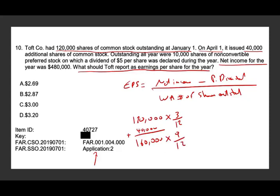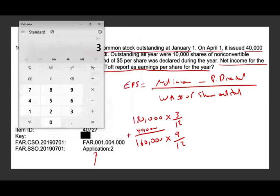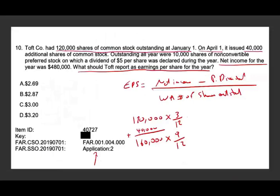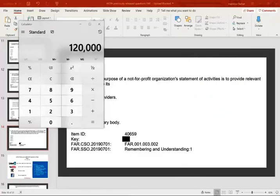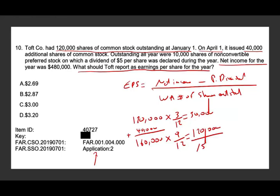We need to find the denominator — the weighted average number of shares outstanding. 3/12 times 120,000 equals 30,000. Then 9/12 times 160,000 equals 120,000. So the denominator — the weighted average number of shares outstanding — is 150,000.